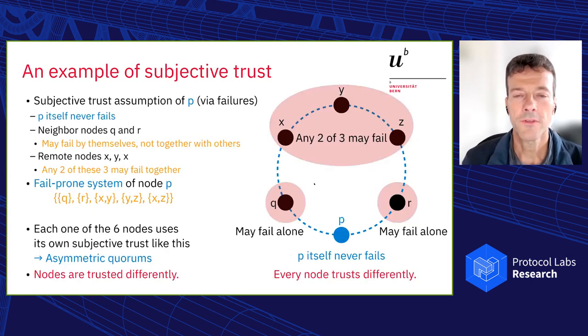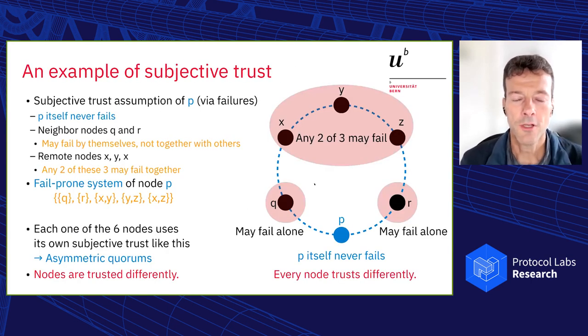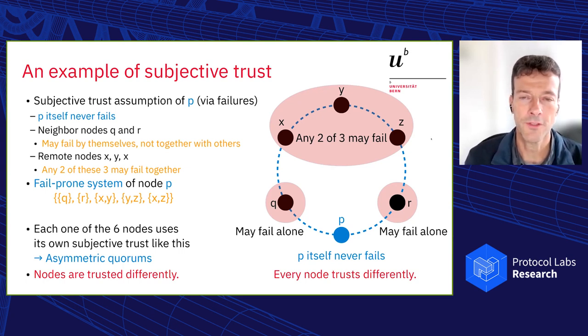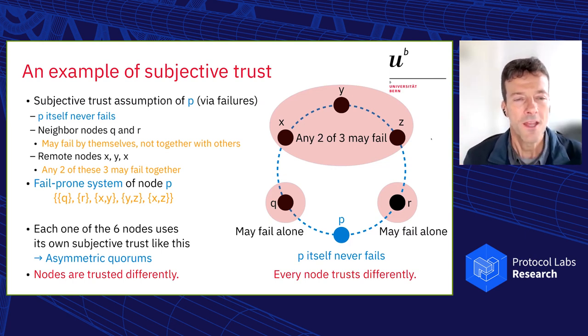There are neighbors that it trusts more, namely the Q and the R node. Because they are close to it. And then there are the remote nodes up here, X, Y, and Z. And it trusts them less. So it trusts them all in the form that anyhow, two out of these three might fail because they are far away. And those that are far away, you usually don't trust them so well.